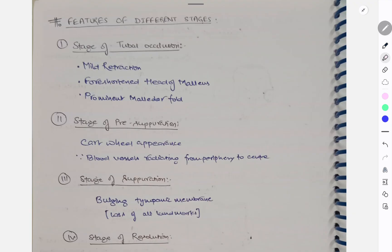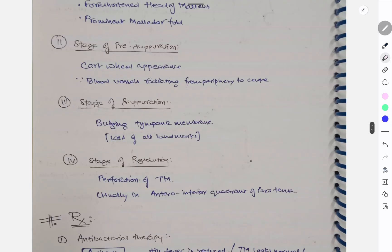Again summarizing the features of different stages. So first stage we had stage of tubal occlusion. Here we had mild retraction of tympanic membrane, foreshortened head of malleus, prominent malleolar fold. And stage of pre-suppuration, we have told you that is cart wheel appearance, blood vessels radiating from periphery to the center. So you can imagine the blood vessels radiating from periphery to center giving the appearance of a cart wheel. Stage of suppuration we have bulging tympanic membrane, loss of all landmarks. And stage of resolution you have perforation of tympanic membrane and it is usually in the antero-inferior quadrant of pars tensa. That is very important.